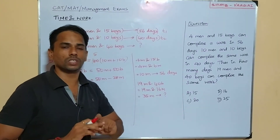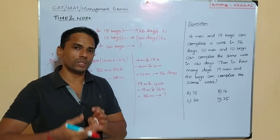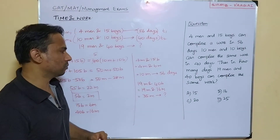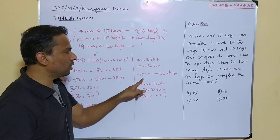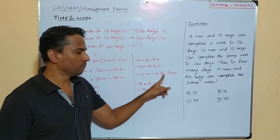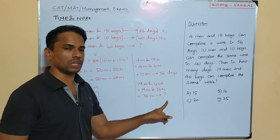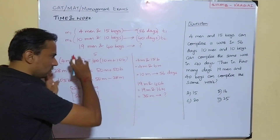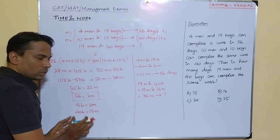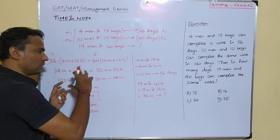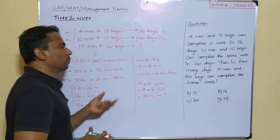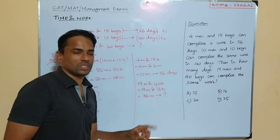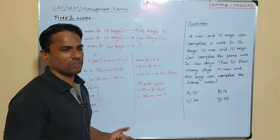Our question is now looking very simple. We have converted everything to men. The problem reduces to: 10 men can finish a work in 56 days, then 35 men can finish the same work in how many days? All the equations and conversions were done just to achieve this simplification.